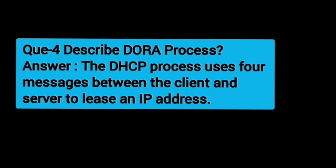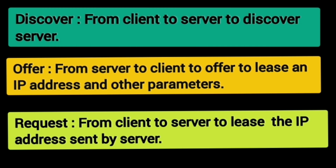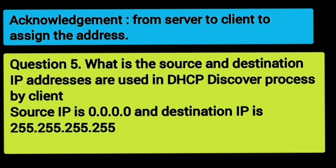Question 4: Describe the DORA process. The DHCP process uses 4 messages between the client and server to lease an IP address. D is for Discover — from client to server, to discover the server. O is for Offer — from server to client, to lease an IP address and other parameters. R is for Request — from client to server, to request the IP address sent by the server. A is for Acknowledgement — from server to client, to assign the address.